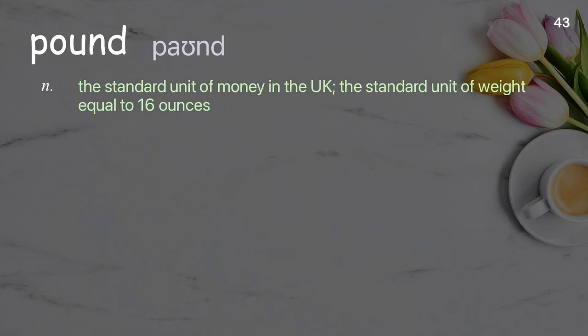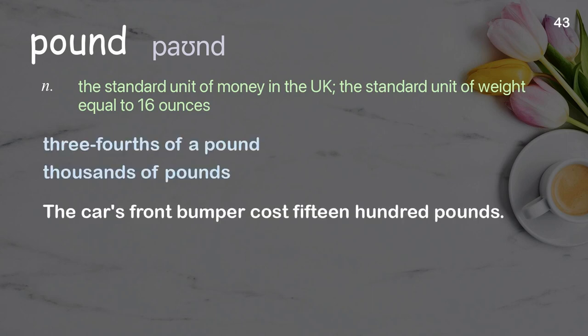Pound: the standard unit of money in the UK; the standard unit of weight equal to 16 ounces. Examples: three-fourths of a pound, thousands of pounds. The car's front bumper cost 1,500 pounds.